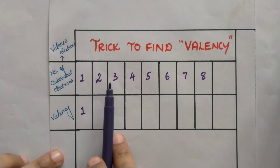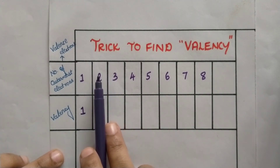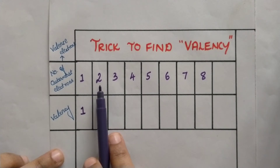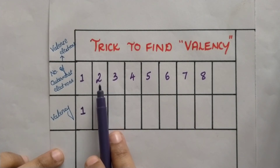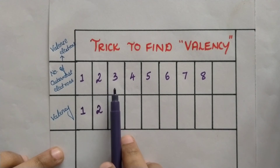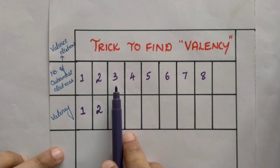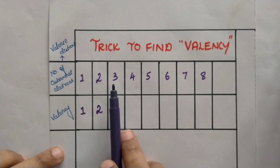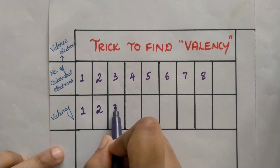Similarly, for an element with 2 outermost electrons, rather than gaining 6 electrons to acquire the octet configuration, it can donate 2 electrons. Donating 2 is very easy, so the valency becomes 2. When the number of outermost electrons is 3, the element requires 5 more electrons for octet configuration, but donating 3 electrons is easier than gaining 5. So the valency is 3.